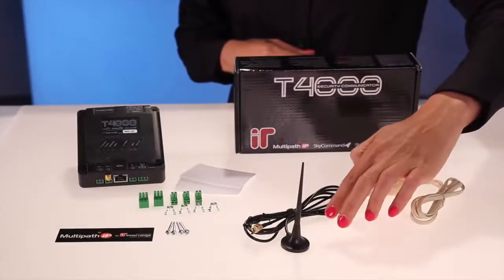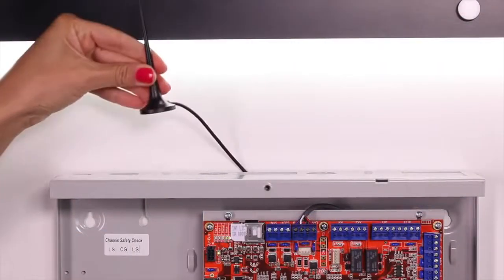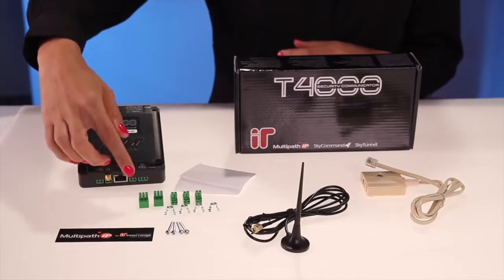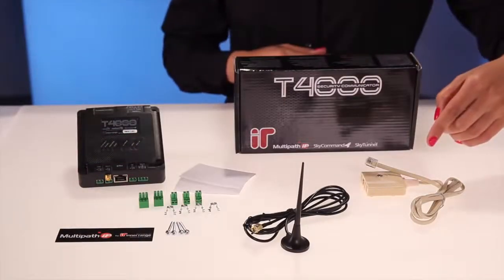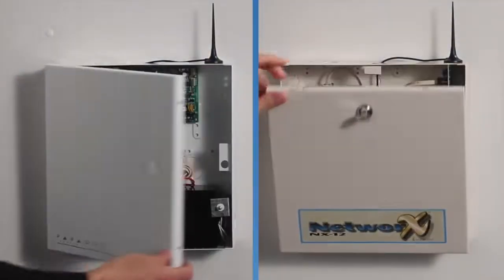Here we have the T4000 kit. A magnetic base antenna is provided, which can easily be attached to the top of your alarm panel enclosure. All the necessary mounting hardware, connectors, and a dialer capture lead are provided. The T4000's small footprint allows it to easily retrofit into existing alarm cabinets.